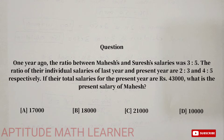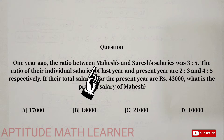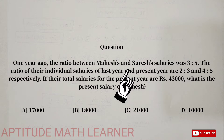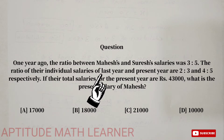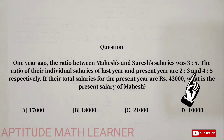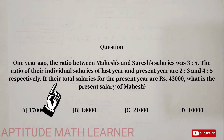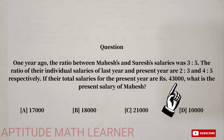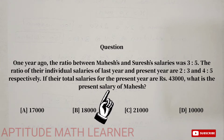Welcome to my YouTube channel Aptitude Math Learner. Today's question is: one year ago, the ratio between Mahesh and Suresh's salaries was 3:5. The ratio of their individual salaries of last year to present year are 2:3 and 4:5 respectively. If their total salaries for the present year are 43,000, what is the present salary of Mahesh?